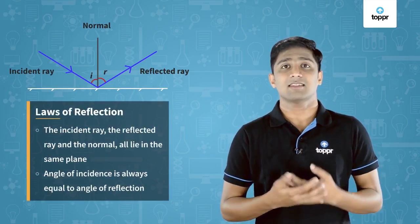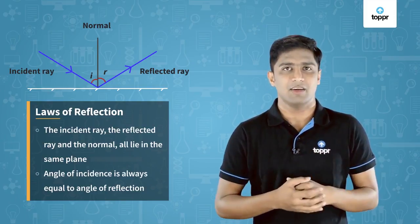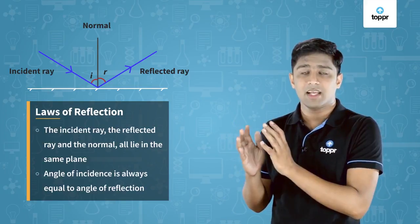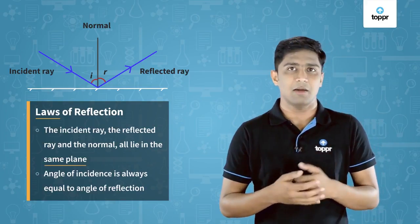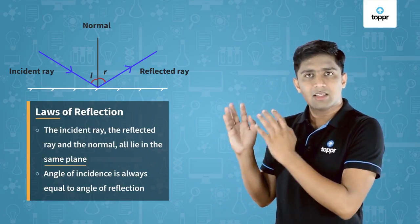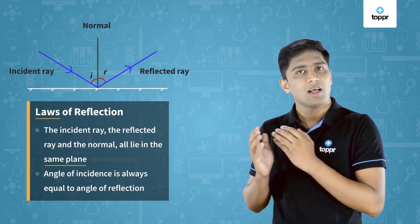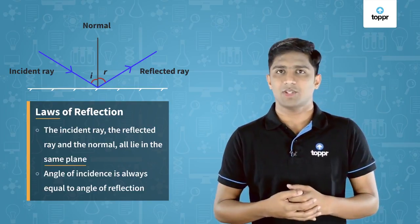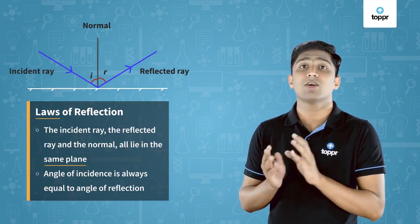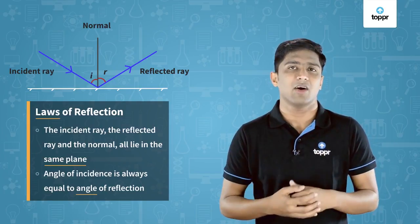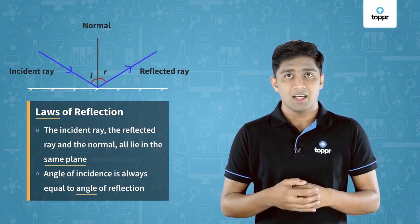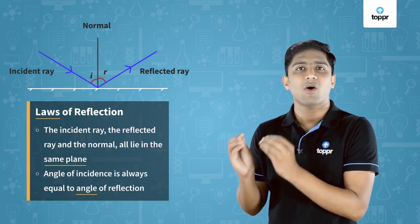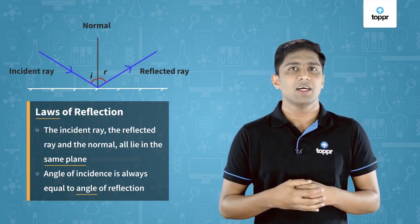By analyzing these facts, scientists have made some laws for reflection. The first law states that the incident ray, the reflected ray, and the normal lie on the same plane. The second law of reflection states that the angle of incidence is always equal to the angle of reflection.